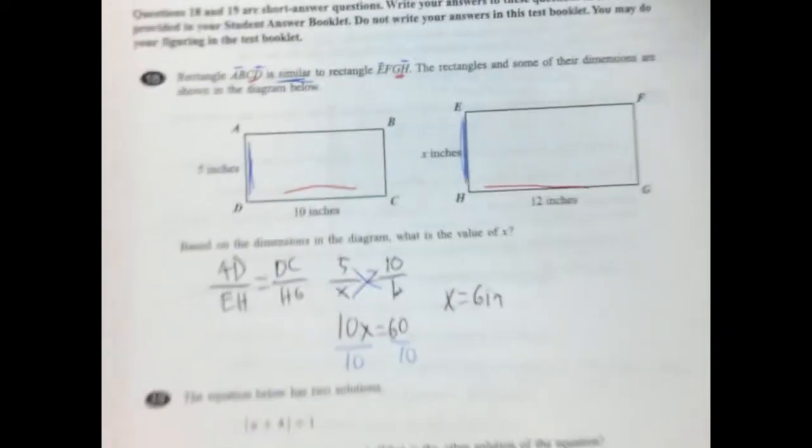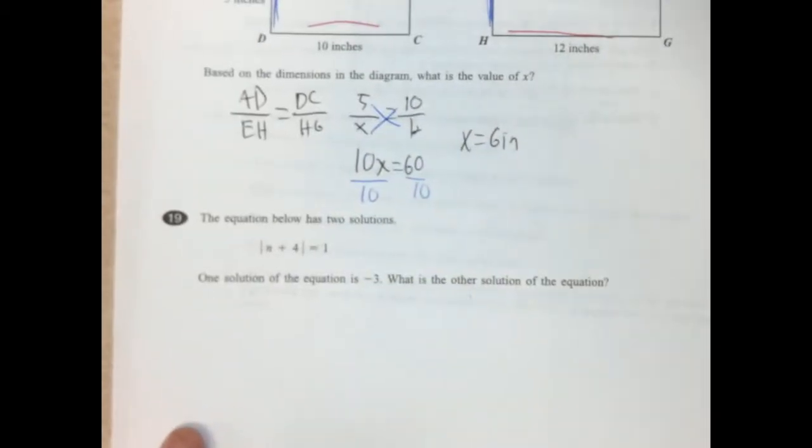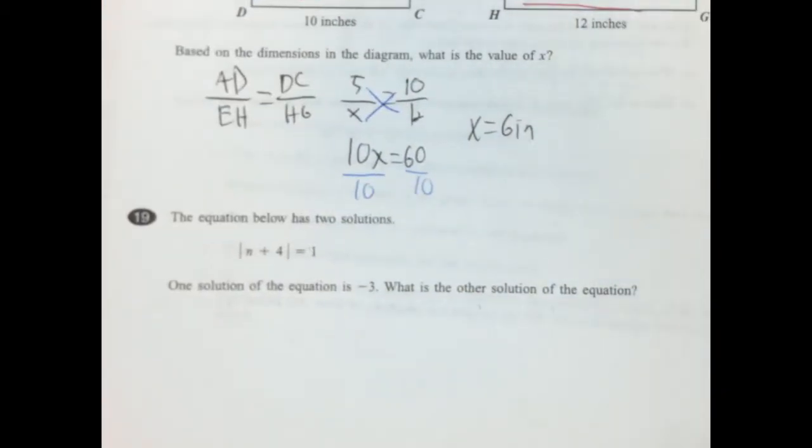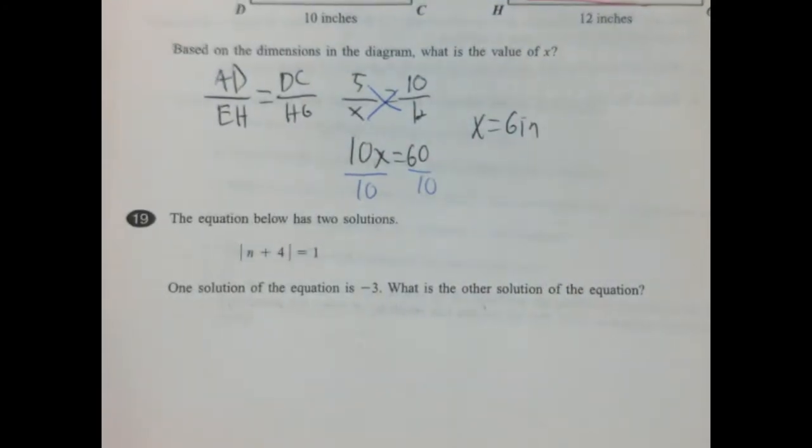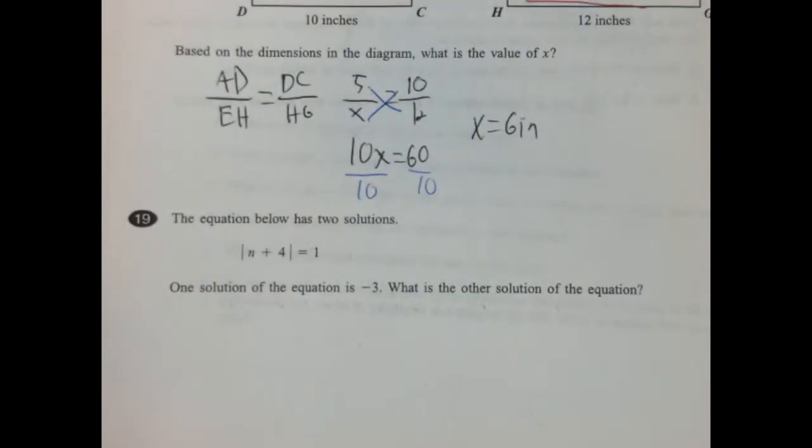Okay, let's look at number 819. The equation below has two solutions. The absolute value of n plus 4 is equal to 1. One solution is negative 3. What's the other solution to the equation? So there's two ways to solve this. You can mental math this and say, okay, well, we're looking for two numbers that have a difference of 1. So negative 3 and 4 have a difference of 1. And then negative 5 and 4 have a difference of 1.